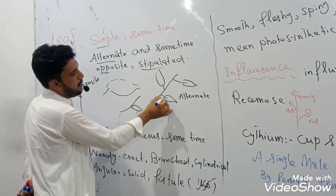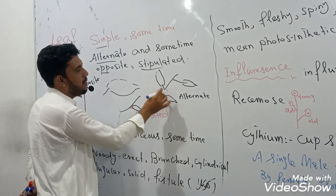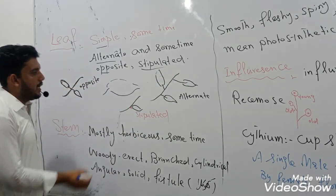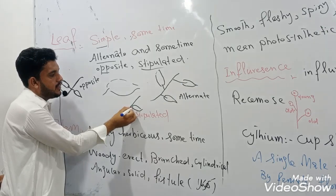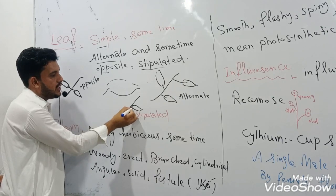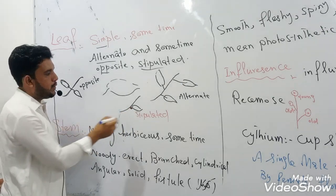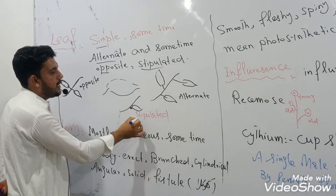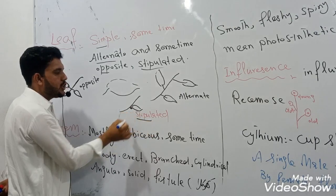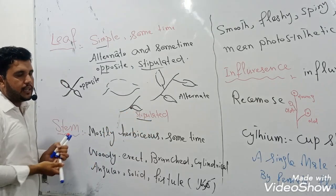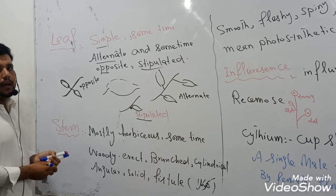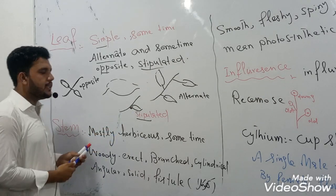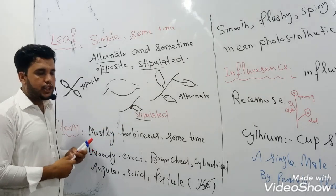When leaves are attached in alternate form, this is called alternate arrangement. The leaves have a small green structure below the leaf which is known as a stipule. Those plants which have stipules are known as stipulated plants. The leaves of this family are stipulated.